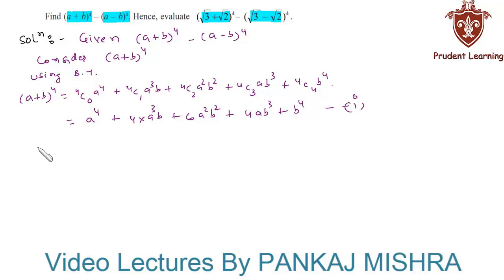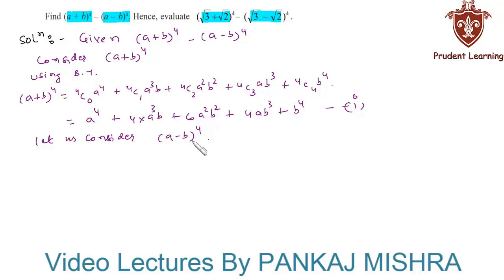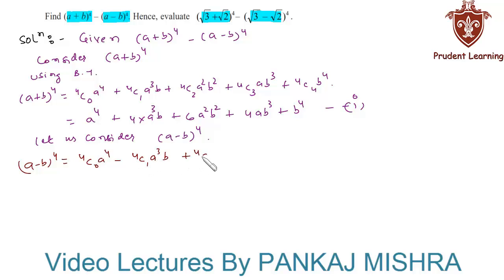Now let us consider (a - b) whole raised to 4. We will expand this quantity using the binomial theorem. So (a - b) whole raised to 4 is equal to 4C0·a⁴ - 4C1·a³b + 4C2·a²b² - 4C3·ab³ + 4C4·b⁴.